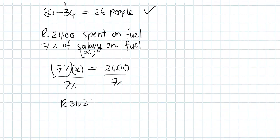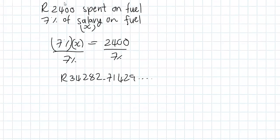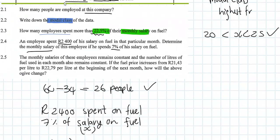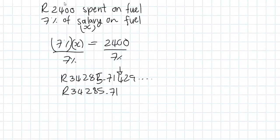This comes to 34,285.714... and obviously with money you definitely want to round to two decimal places. So we round down to R34,285.71. Check you answered the question correctly - determine the monthly salary. Yes, this is x, x equals the monthly salary, so we have correctly answered that question.